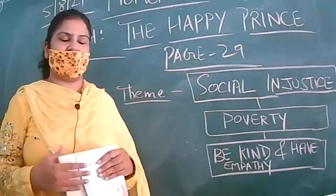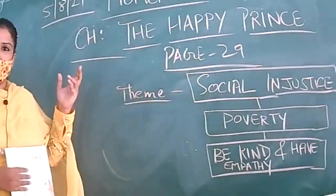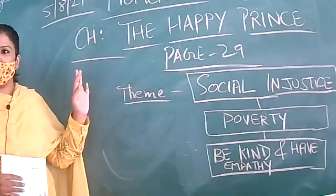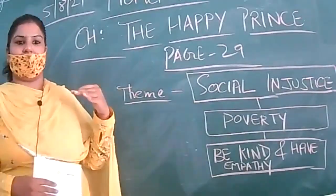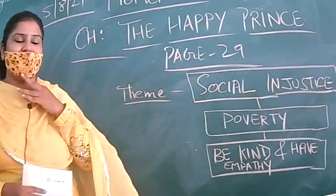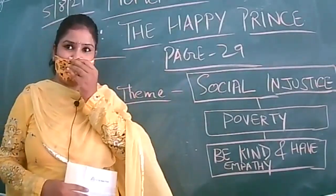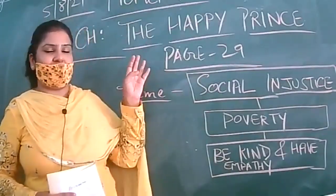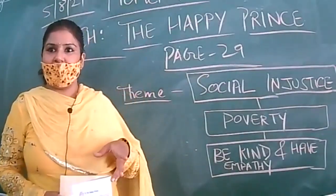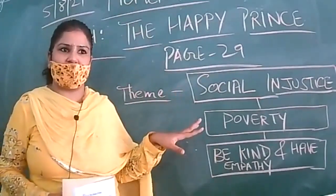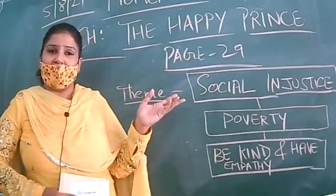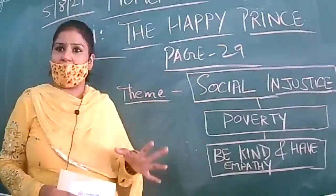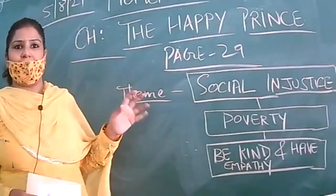He was getting all the luxurious items in his house. He did not know what being sad was. So when he became a statue and his statue was erected at the highest pedestal in the town, he started seeing the people who were suffering. After seeing them, the statue started crying — there is so much social injustice and he did not know it when he was alive.